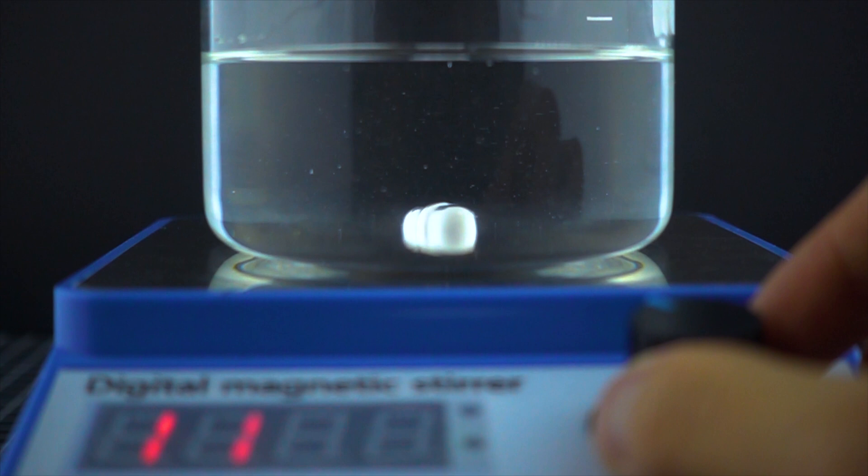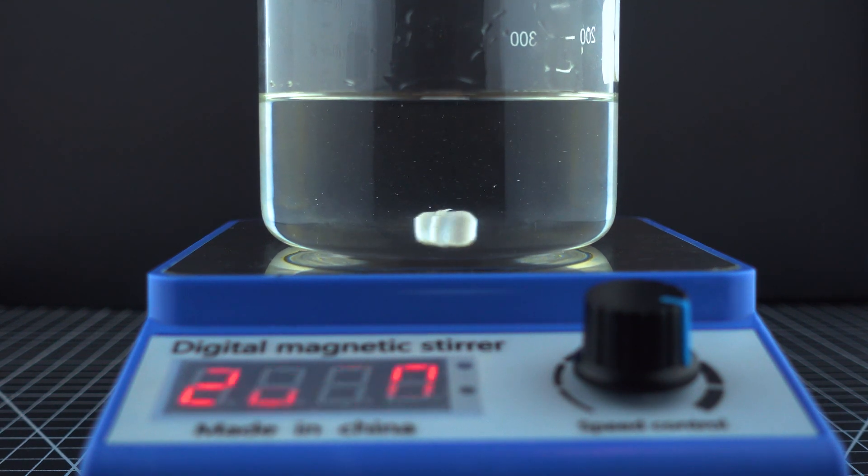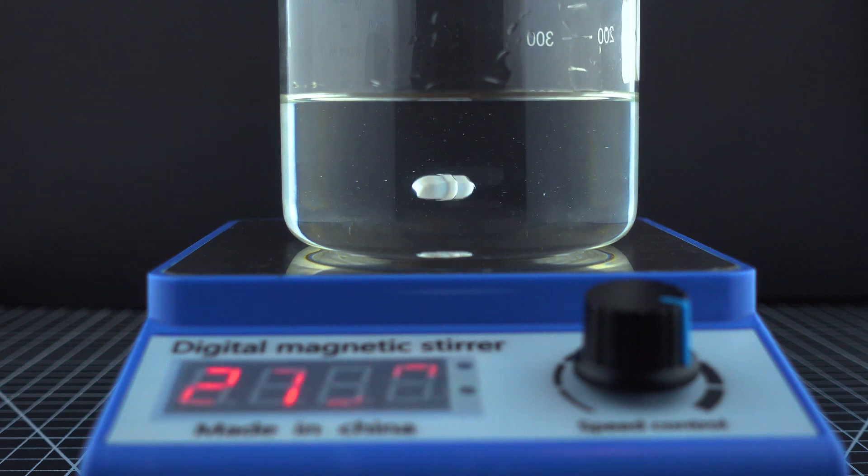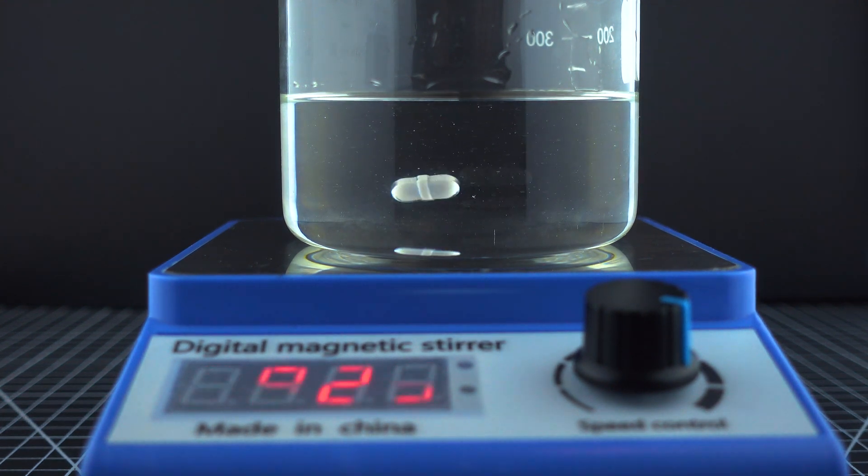However, it is still not enough to make the bar jump up. To address this issue, I had to raise the beaker up away from the platform. This allows the bar to become decoupled from the magnet below and the levitation can be started.